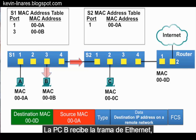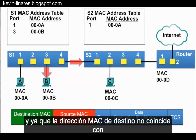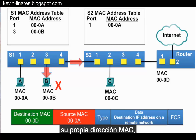PCB receives the Ethernet frame, and because the destination MAC address does not match its own MAC address, it does not accept the rest of the frame.